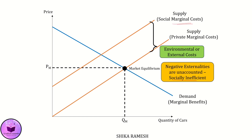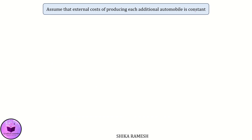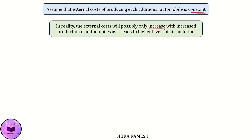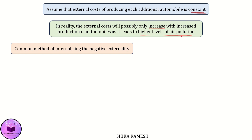The social marginal cost curve lies above the private marginal cost curve, or the original supply curve. The vertical distance between the private marginal cost curve and the social marginal cost curve represents the external costs incurred for producing each additional unit of automobile, measured in monetary units. In this case, let us assume that the external costs of producing each additional automobile are constant, though in reality the external cost will likely only increase with increased production as it leads to higher air pollution and severe congestion.